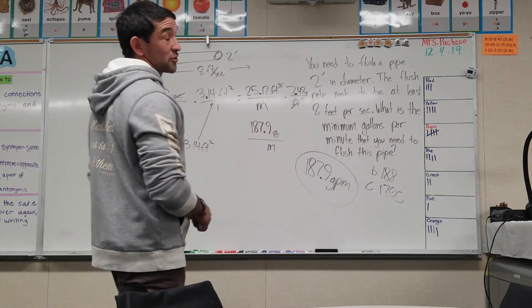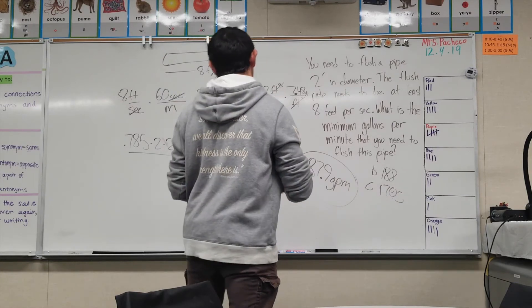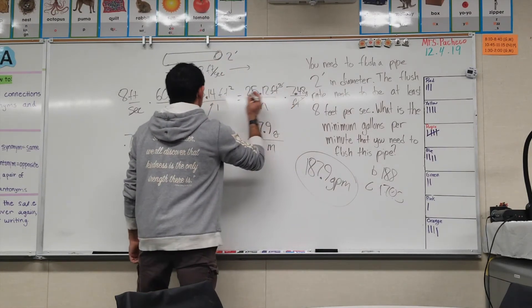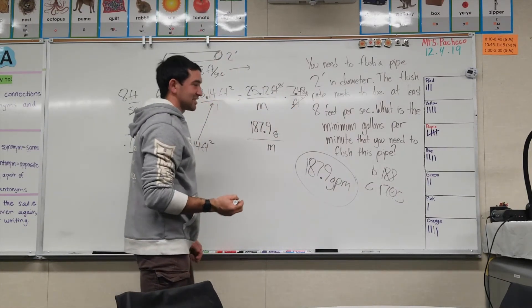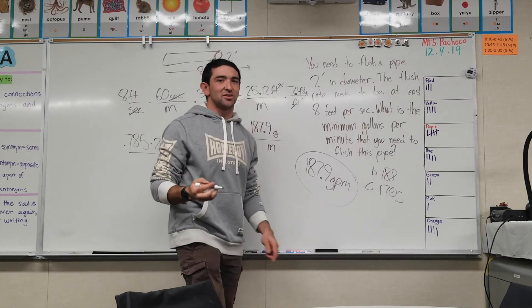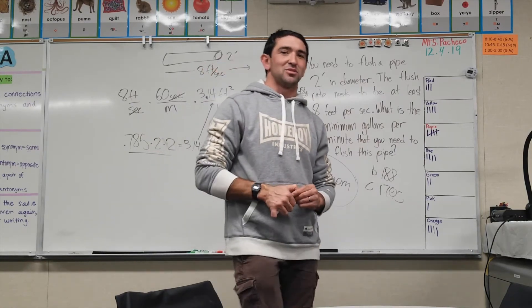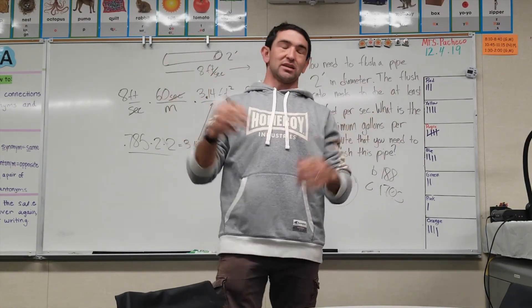Don't get confused with the decimals and the multiplication signs. Those small dots are multiplication signs. I don't like to use X's for multiplication because I use X to solve for variables — if I use X to multiply you just see a bunch of X's and it gets confusing.